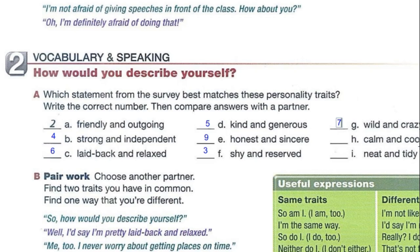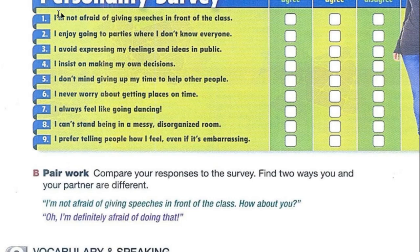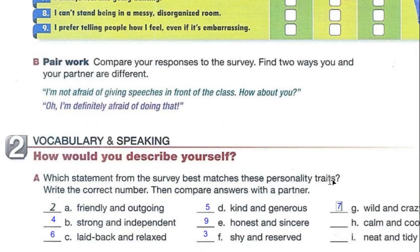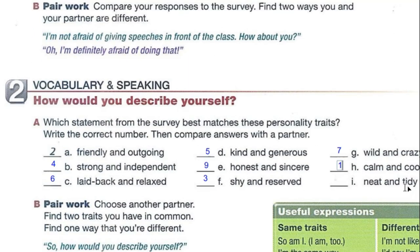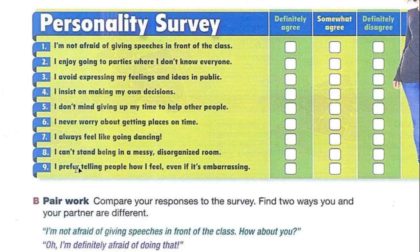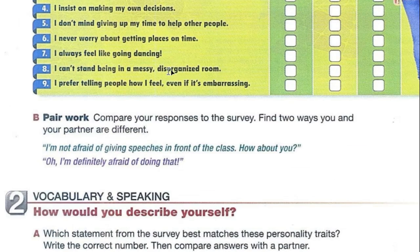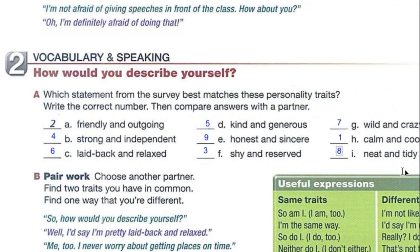What about calm and cool? I'm not afraid of giving speeches in front of the class — so if you are not afraid of giving speeches in front of the class, that means you are calm and cool. That is number one. And the last one: neat and tidy. These words are similar — it means you are very organized, everything is in order. For example, I can't stand being in a messy, disorganized room. So if you can't stand being in a messy room, that means you are neat and tidy. That is number eight. That's it!